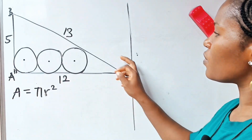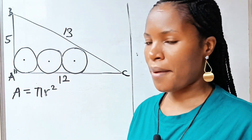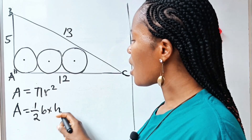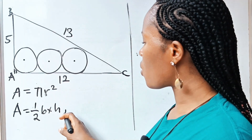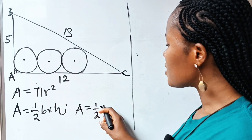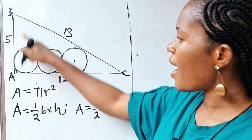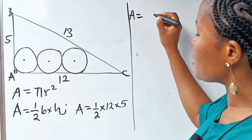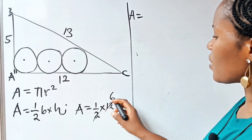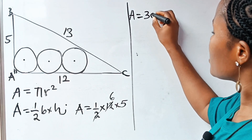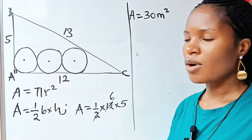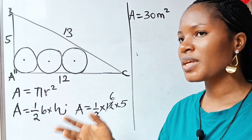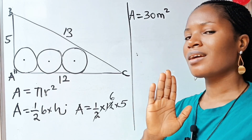Let us start by finding the area of the whole triangle. The area of a triangle is equal to half base times height. So the area equals half times the base of 12 times the height of 5. Half of 12 gives us 6; 6 times 5 gives us 30. So the area is 30 square units.